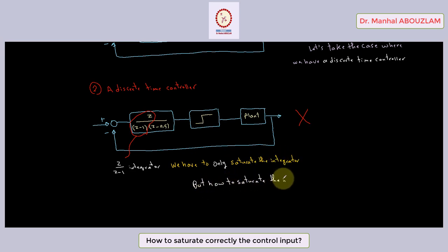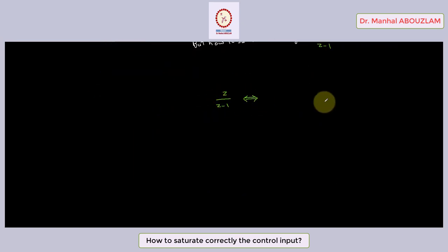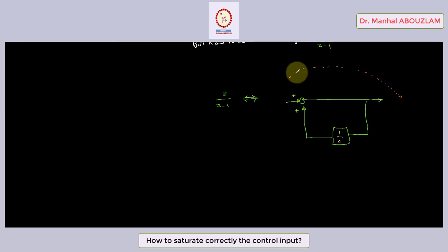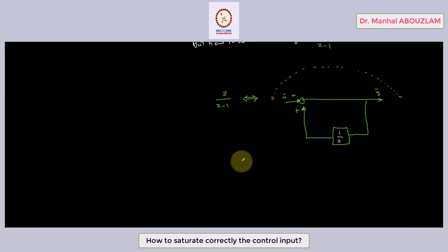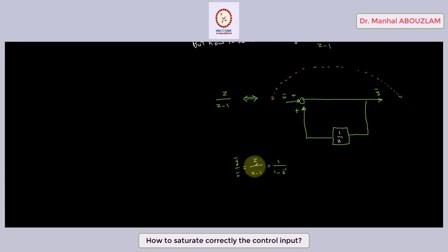But how to saturate this integrator z over z minus 1? This integrator corresponds to this block diagram. The ratio between these two signals is z over z minus 1, which is equal to 1 over 1 minus z to the power of negative 1. We simply multiply the numerator and denominator by z to the power of negative 1 to obtain 1 over 1 minus z to the power of negative 1.